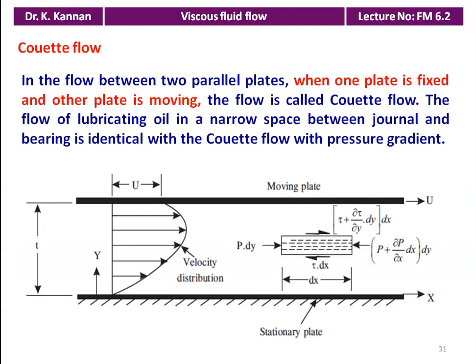Regarding Couette flow: when we have flow between two parallel plates, in the earlier lecture we discussed the case where both plates are fixed. But here, when one plate is fixed and another plate is moving, the flow is called Couette flow. The flow of lubricating oil in the narrow space between a journal and bearing is identical with Couette flow with a pressure gradient. In the journal bearing, there is a rotating shaft and a fixed journal with a thin layer of lubricant between them — that flow of lubricant is called Couette flow.